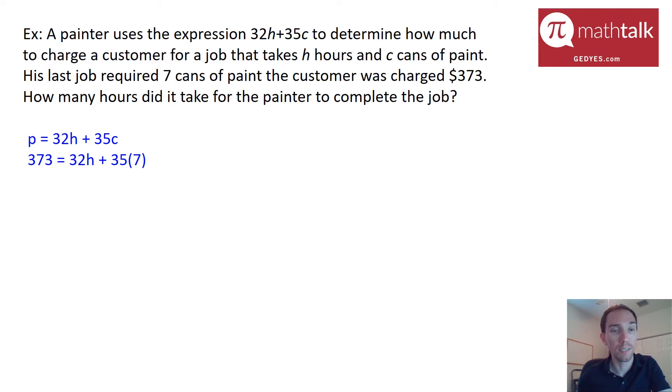We're going to plug in what we have. When we do that we get 373 equals 32H plus 35 times 7. So using my calculator 35 times 7 is 245.